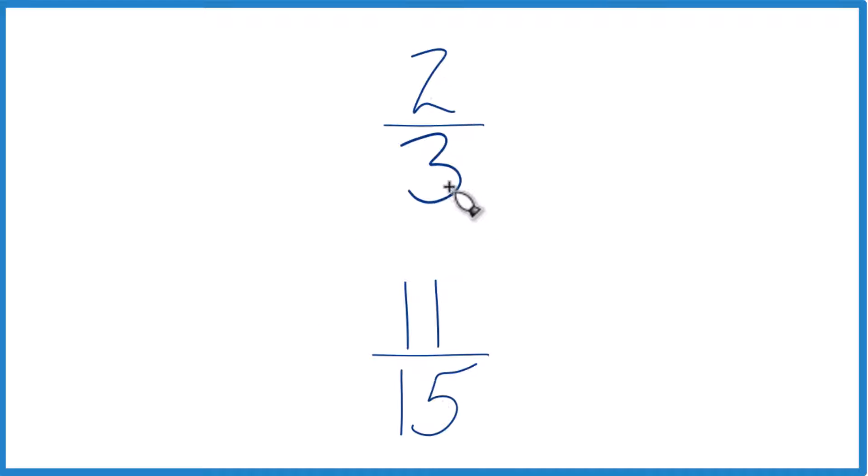You could just divide 2 by 3 in a calculator, get a decimal, 11 by 15, get your decimal, and compare them. That would tell you whether 2/3 is greater than, less than, or equal to 11/15.